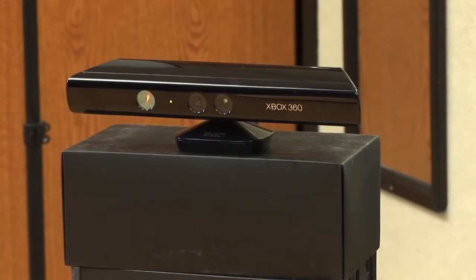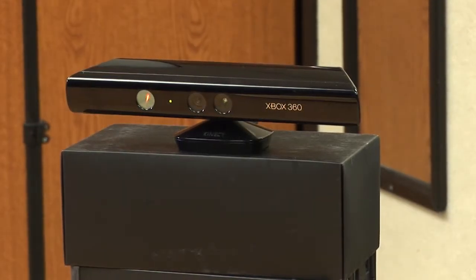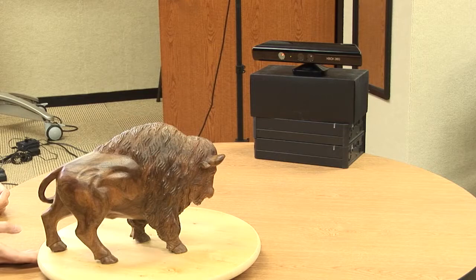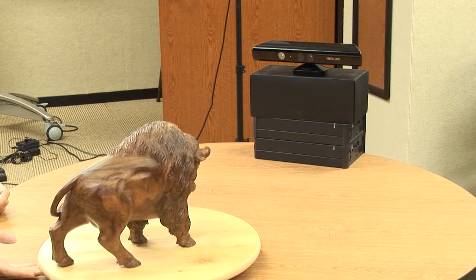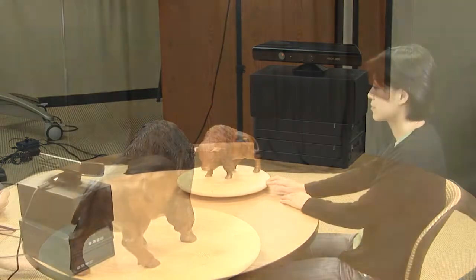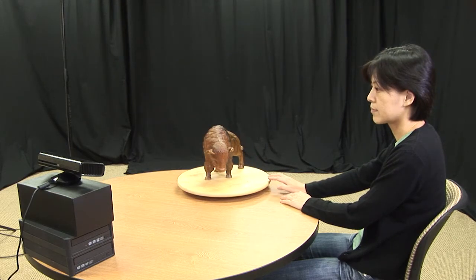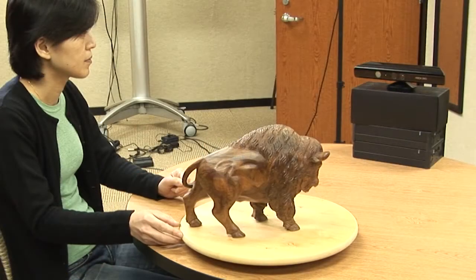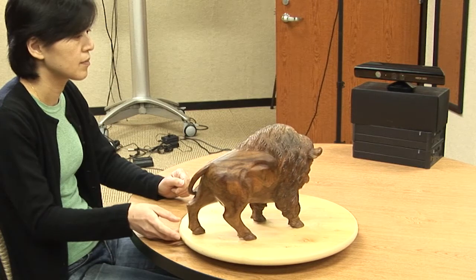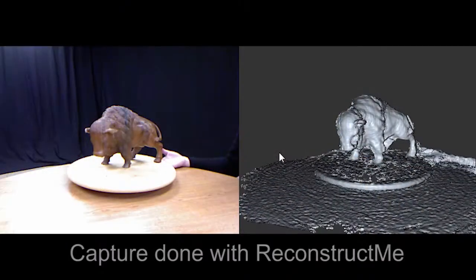Here we have an Xbox Kinect connected to the computer and actively scanning. We also have an object with a model buffalo resting on a lazy Susan, which we are using as a turntable to accurately obtain a 360 view of the buffalo.